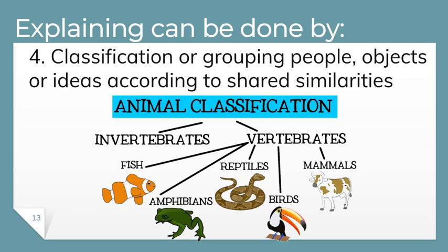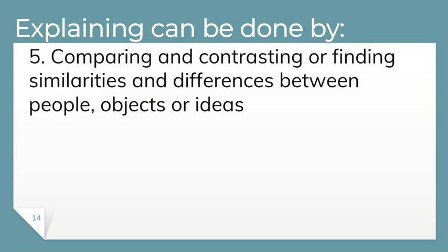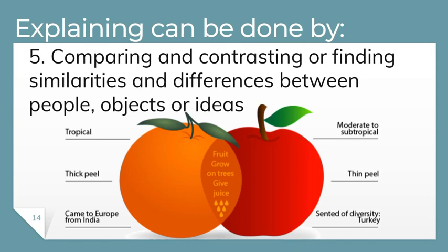Another technique is compare and contrast — finding similarities and differences between people, objects, or ideas. For example, the comparison between an orange and an apple shows the differences and similarities between the two. This is the fifth way to explain things in an expository essay.